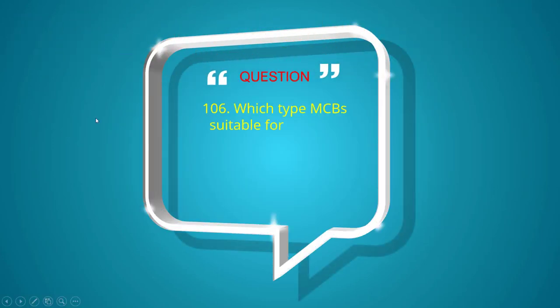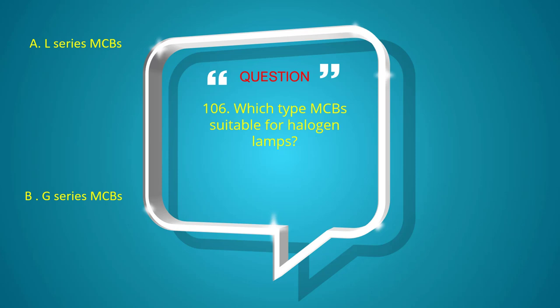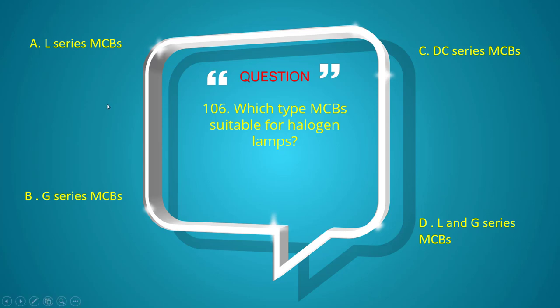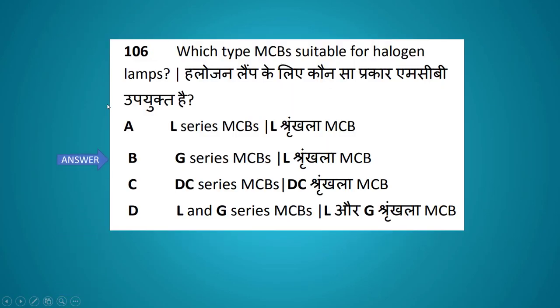Which type of MCB is suitable for halogen lamps? Options: L series MCB, G series MCB, D series MCB, DC series MCB, L and G series MCB. The answer is G series MCB.